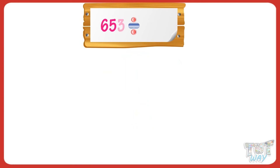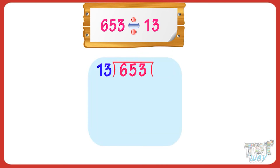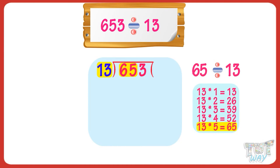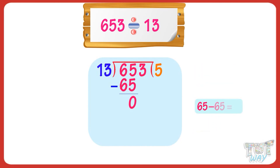Now, let's take one more example of this kind. Let's divide 653 by 13. We cannot divide the first digit of the dividend. So, we will divide the first two digits. The multiple of 13 which is nearest to 65 is 65. 13 multiplied by 5 equals 65. So, write 5 in the quotient and 65 below 65. We got 0 on subtracting. Now, bring down the last digit, that is 3.